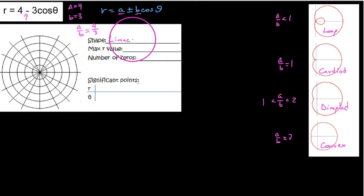So let's go ahead and type this here. We see limaçon, and it is of the dimpled variety. So in terms of the max r value, recall that the maximum r value is always at a plus b. And so when we say a plus b here, we say 4 plus 3, we're going to get a max r value of 7.